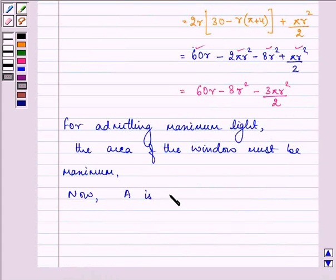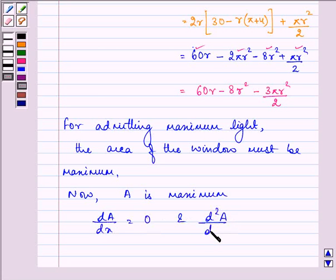A is maximum when dA by dr is equal to 0 and d square A upon dr square is less than 0.